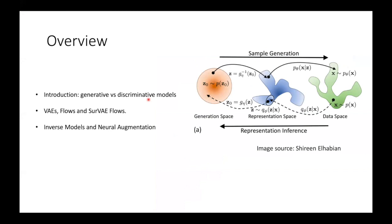As an overview, first I'll talk a little bit about a high level introduction about how I view generative modeling versus discriminative modeling and why it's a good idea to try to combine them. Then I'll talk in a little bit more detail about what VAEs are, what flows are, and then more recent research: how we can combine these two ideas into what we call survey flows. Basically, they are two sides of the same coin, and they're sort of a unifying framework to consider them both in.